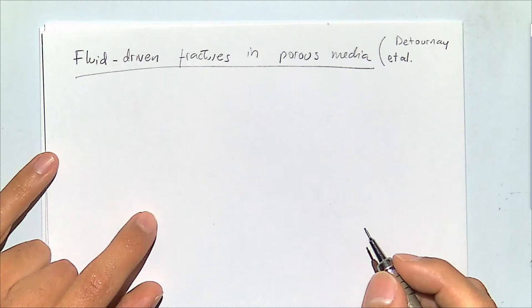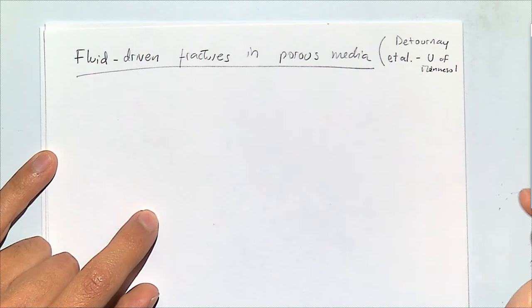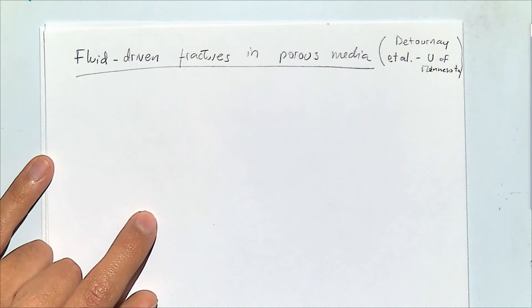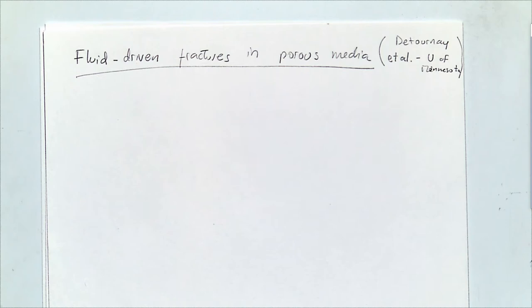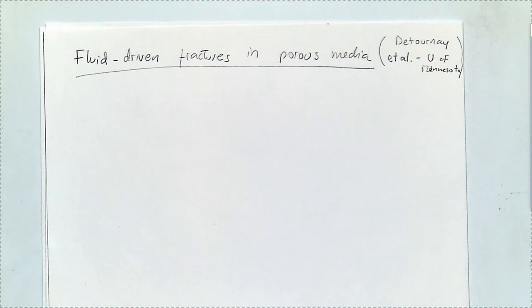Emmanuel Detourney is at the University of Minnesota. He has done a lot of work extending the work of hydraulic fracture for porous media and for poro-elastic media. He also includes the part of poro-elasticity and how effective stress would vary when you have leak-off. The solution we saw — just considering a volume that goes into the fracture and another volume that leaks off — is a very simple solution. It doesn't change anything about the mechanics, and actually when you do have fluid flow, it does have an impact on mechanics.